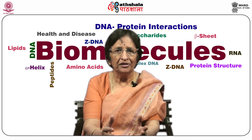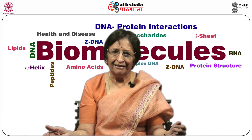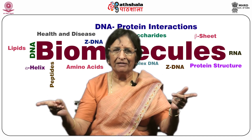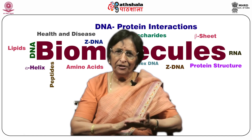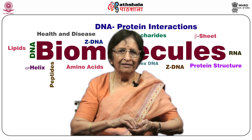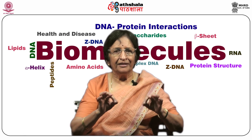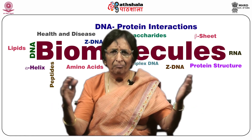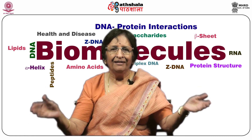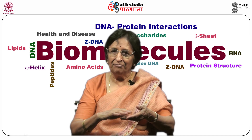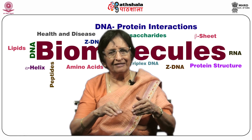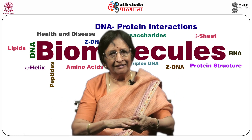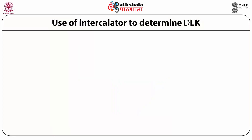We can use intercalators to determine the value of delta LK. The dye reduces the rotational angle between base pairs. As more such molecules bind to DNA, the tension in the negatively supercoiled DNA is relieved and DNA becomes more and more relaxed. The conformation of DNA then becomes less compact, causing a decrease in DNA mobility which can be registered using the intercalator.